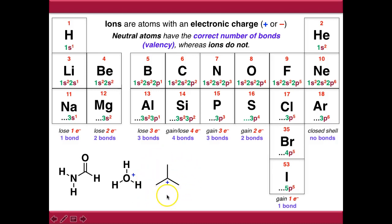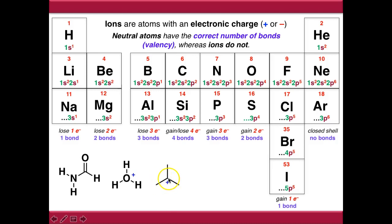This is a carbocation. Even though all of the hydrogens are implicit, what this positive charge is telling us is that this carbon is only trivalent - it doesn't have a hydrogen attached to it. There's an empty P orbital on this carbon, and as a result this is positively charged and it's not making enough bonds.